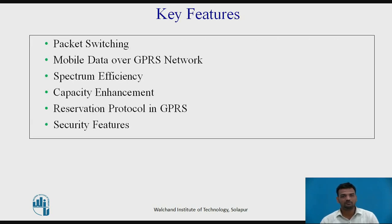Key features of GPRS: Packet switching — GPRS involves overlaying a packet-based air interface on an existing circuit switched network, giving the mobile user an option to use packet-based data services. Mobile data over the GPRS network uses the air interface and infrastructure of GSM to provide mobile packet data service that can support data rates up to 171.2 kbps. Generally the data rate is 9.6 kbps and can be extended to 171.2 kbps.